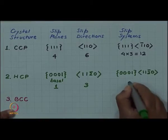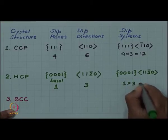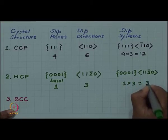So you have a rather limited number of slip system in hexagonal that is only 3 slip systems.